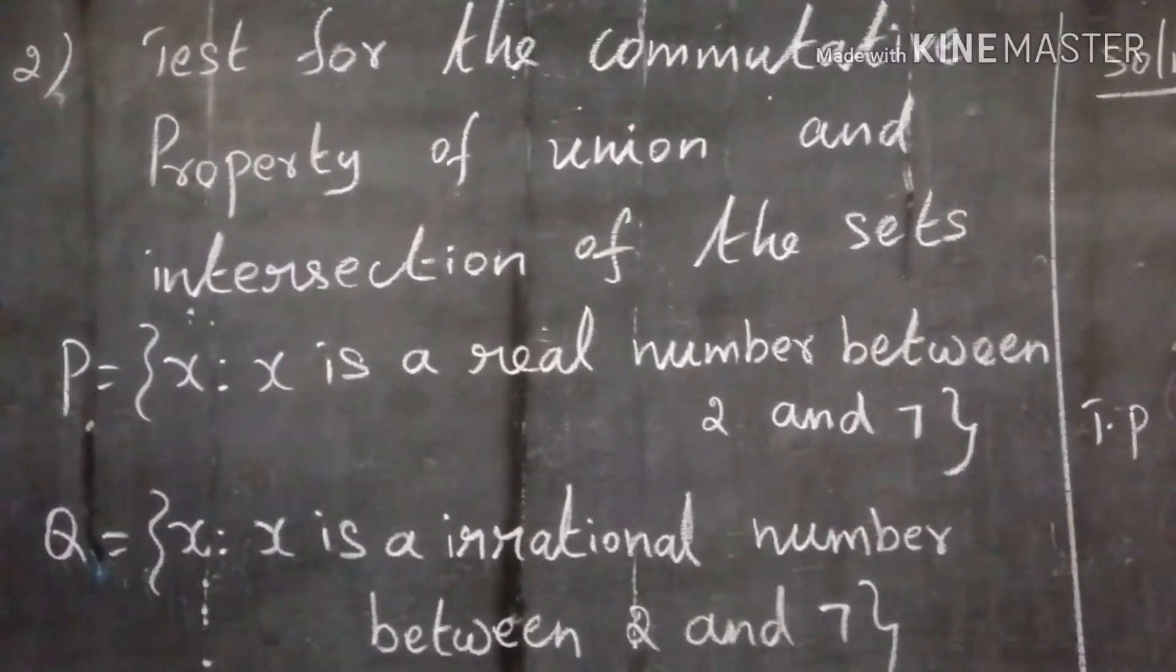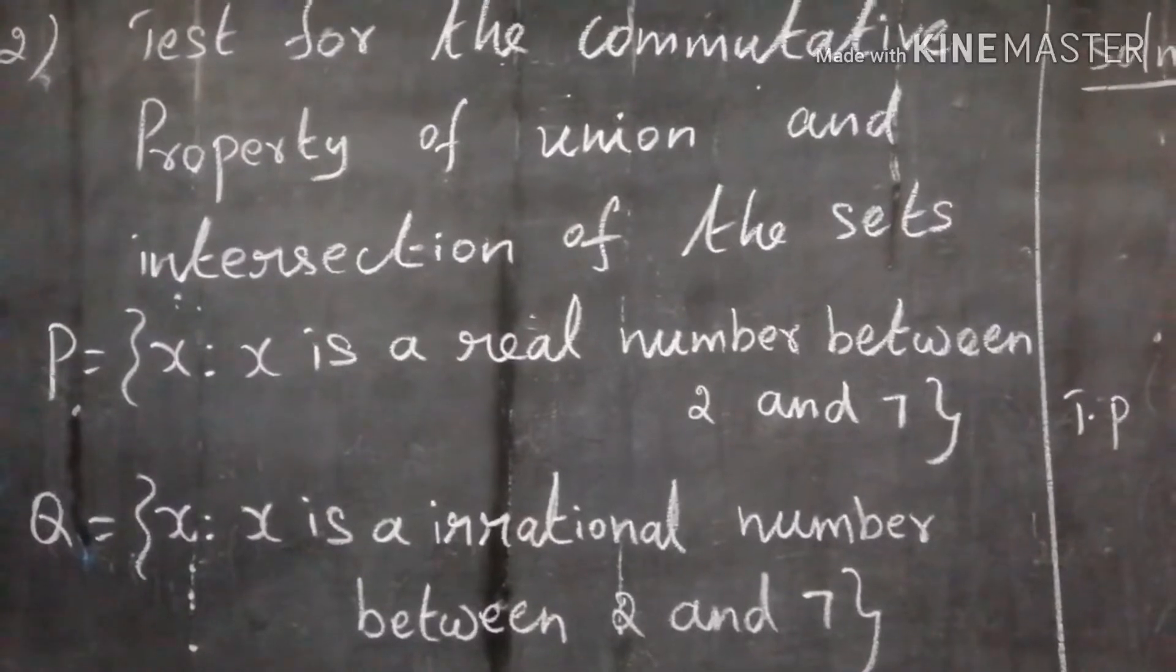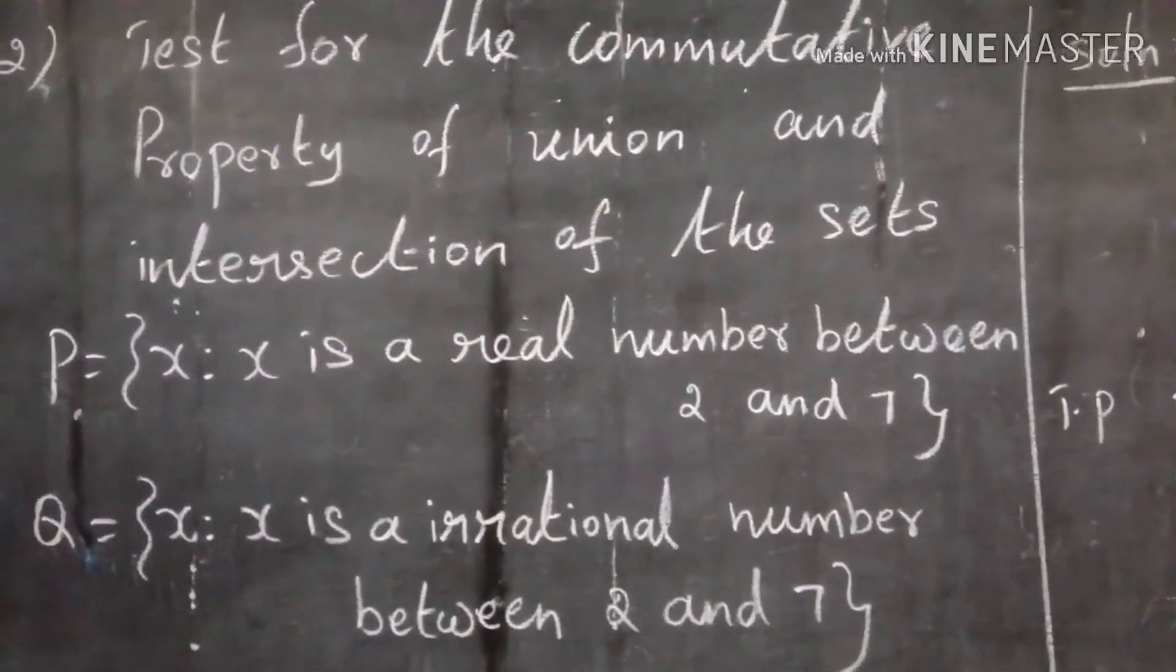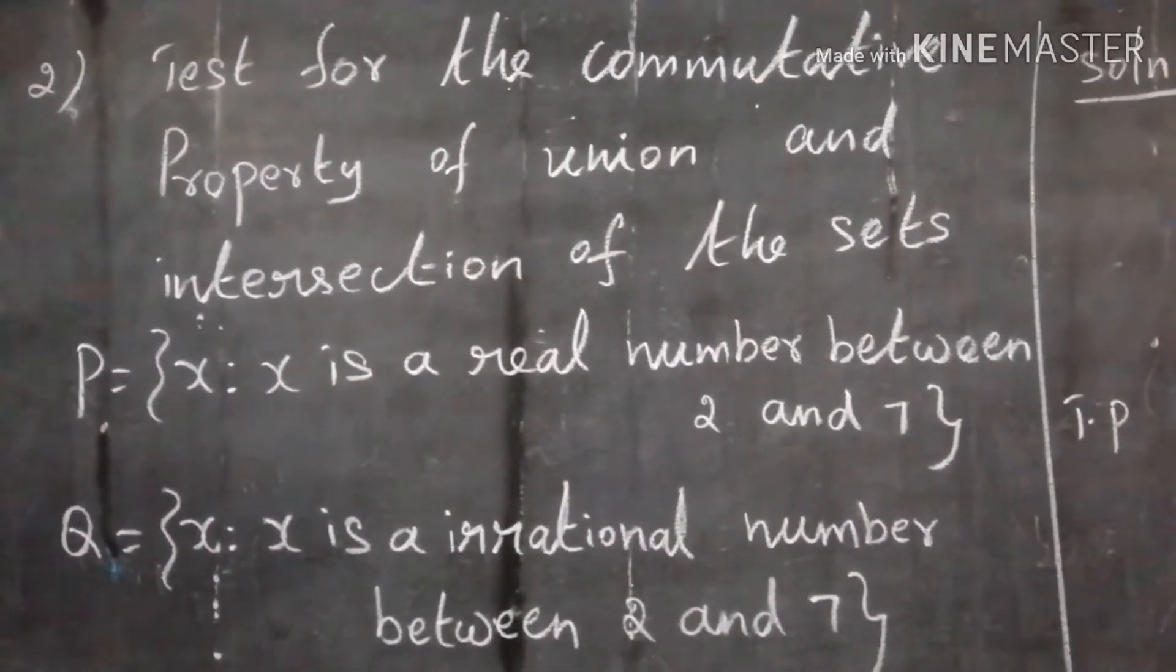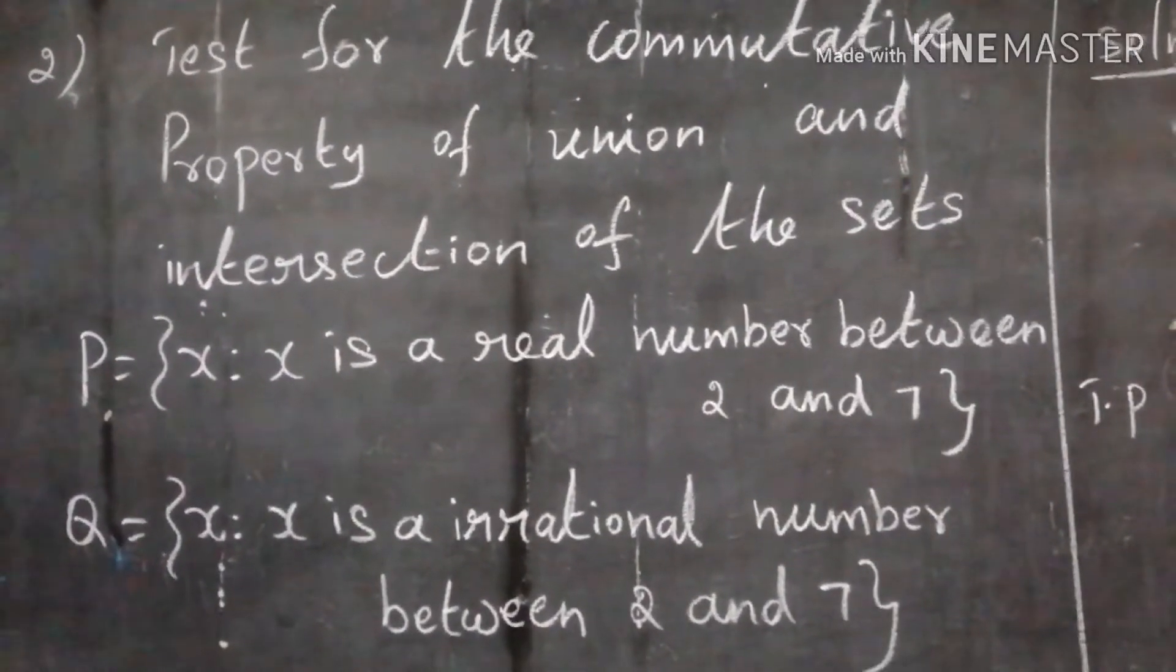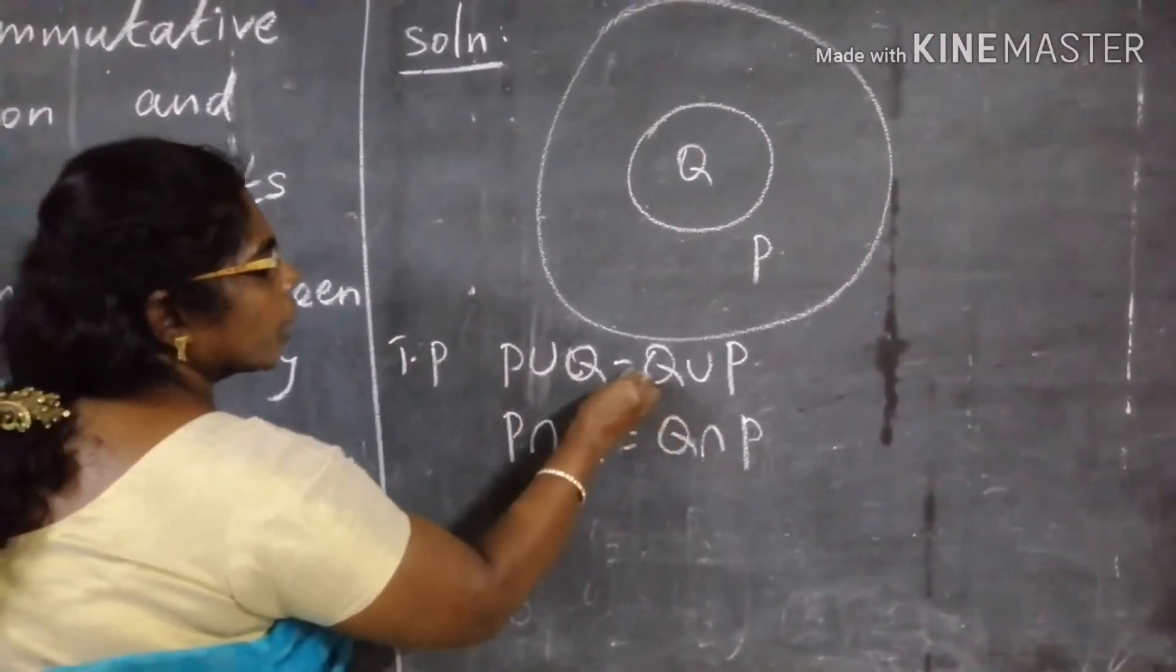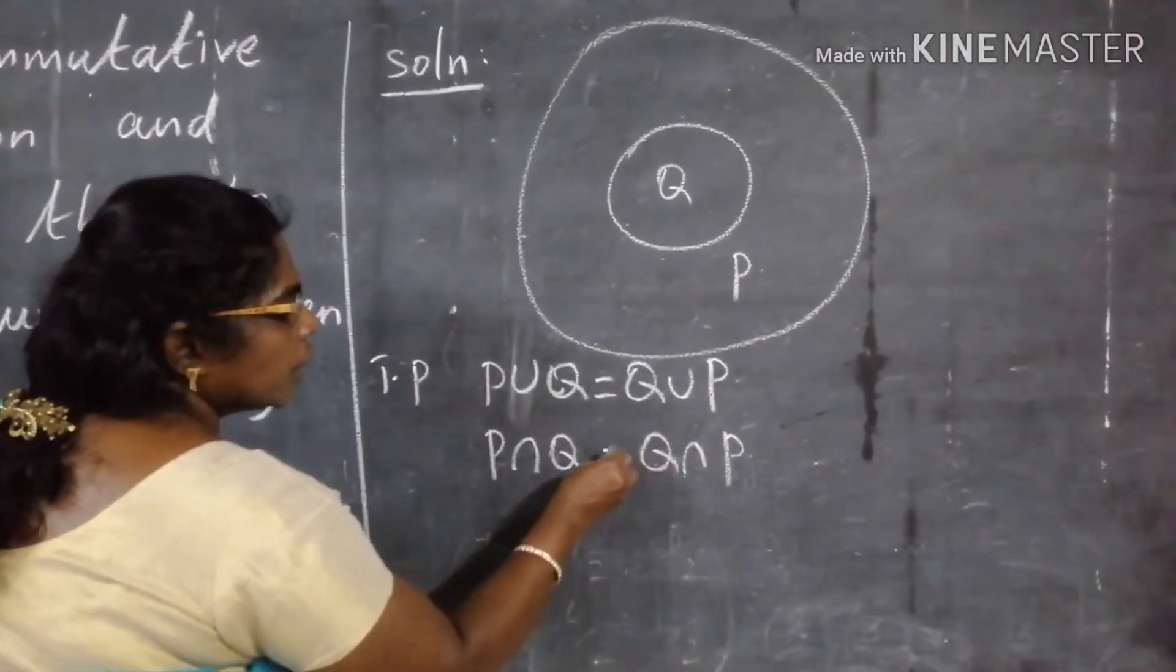Test for the commutative property of union and intersection of sets. P is equal to set of all x such that x is a real number between 2 and 7. To prove P union Q is equal to Q union P and P intersection Q is equal to Q intersection P.